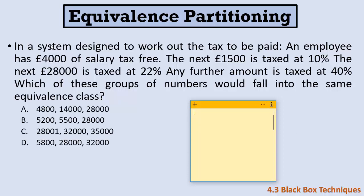Let's look at another example — a system that calculates the tax to be paid. An employee has £4,000 tax-free salary. So if your salary is between £0 and £4,000, you pay no taxes — that's one partition. The next £1,500 is taxed at 10%, meaning salaries between £4,001 and £5,500 fall into the second partition paying 10% tax.